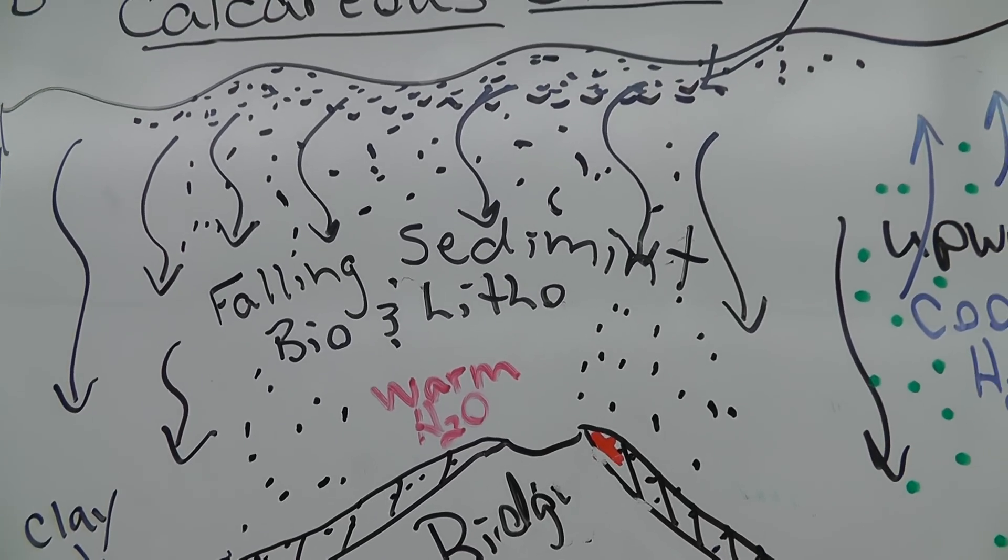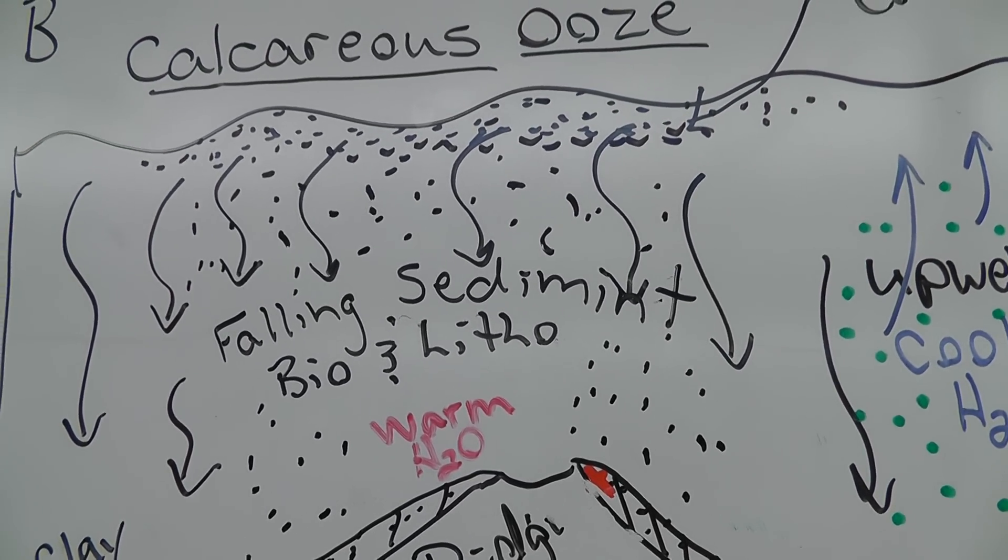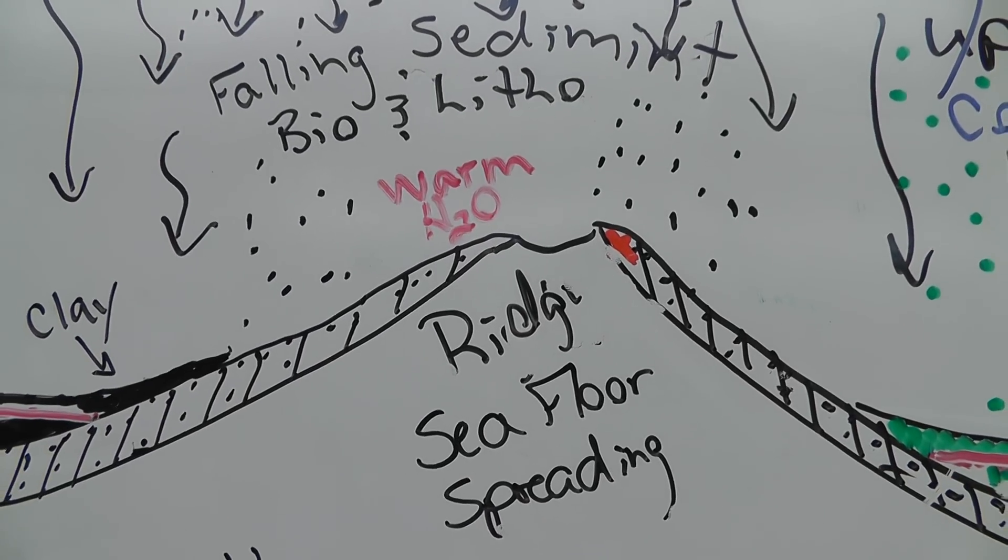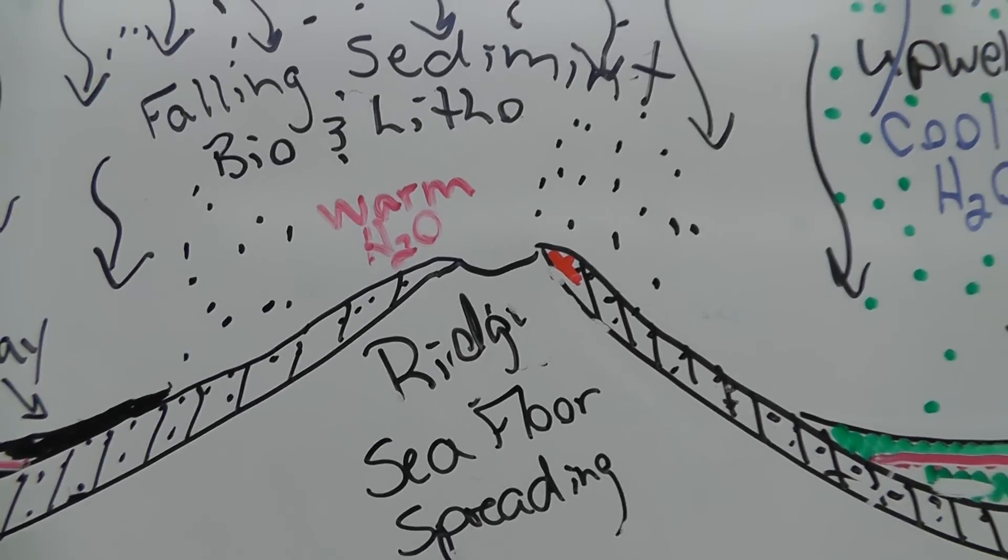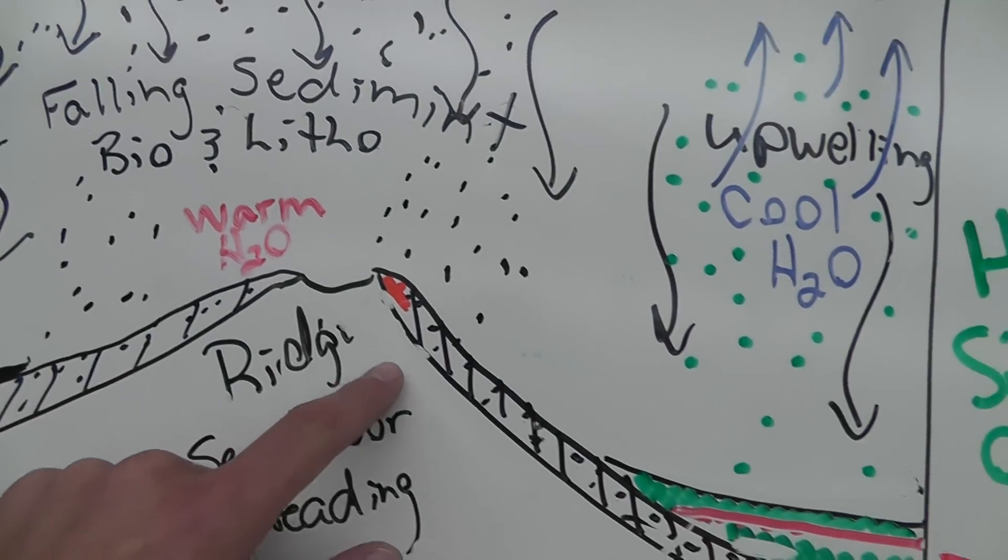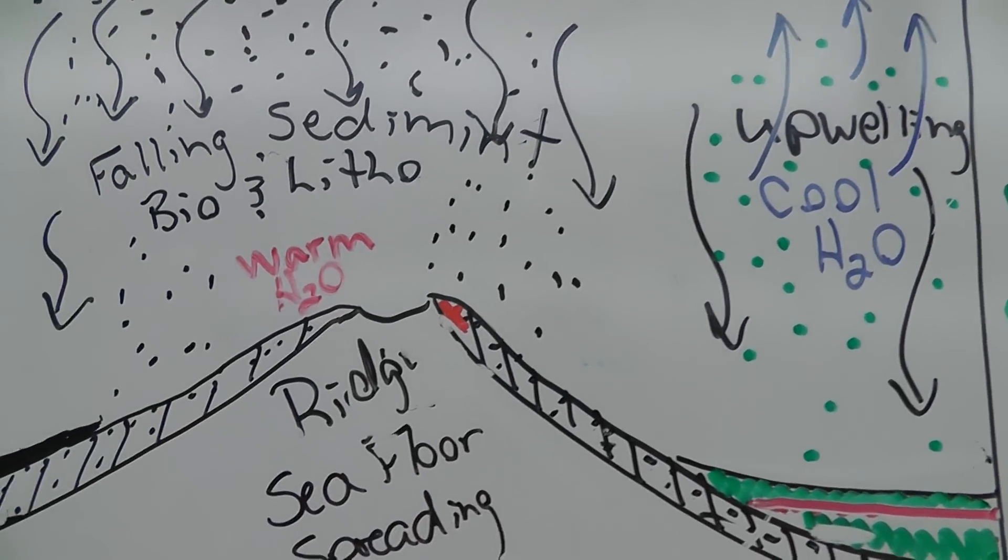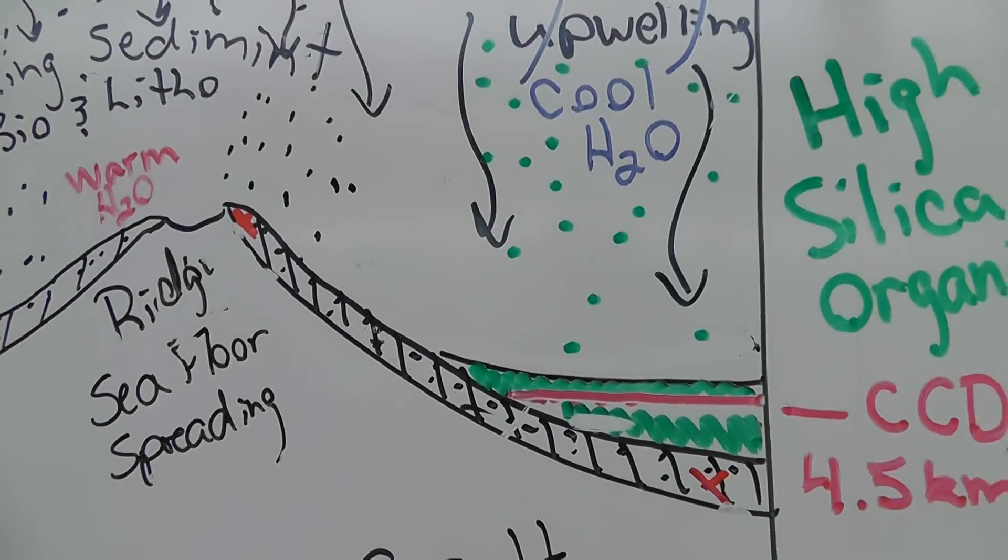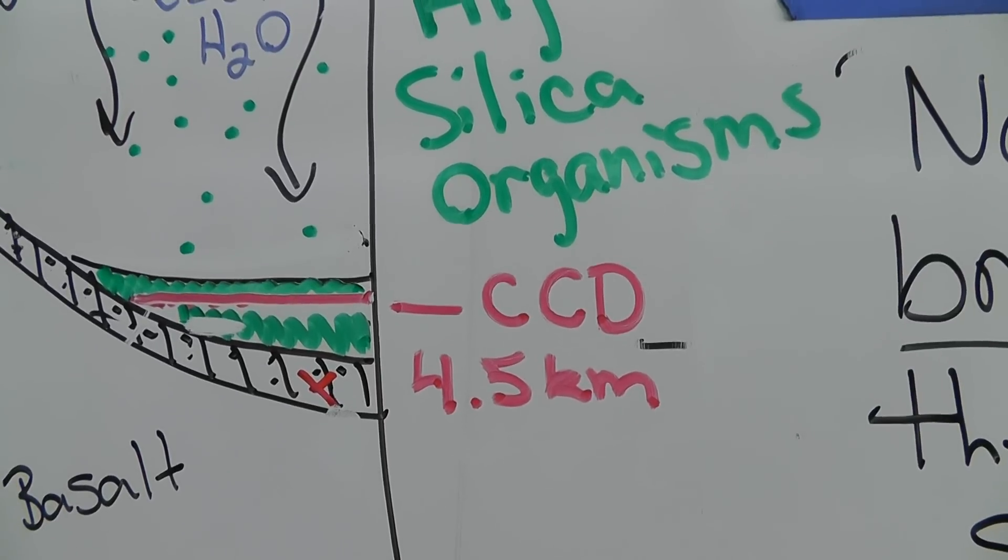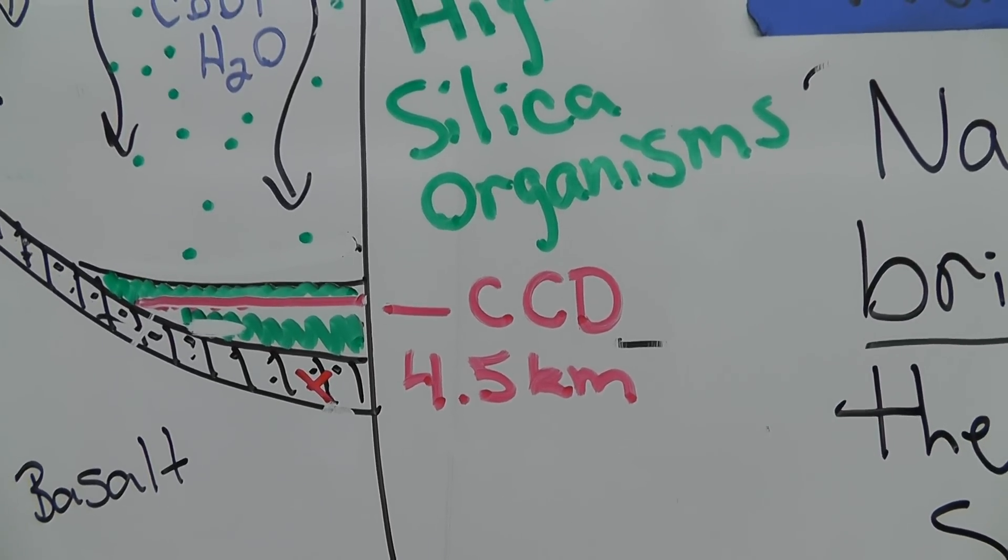So if we look we have a lot of calcite dead calcite organisms falling towards the ridge. So they're going to build up on the ridge. If we look on here they built up here and here. And calcite producing organisms do not fall below the calcite compensation depth which is 4.5 kilometers or 4,500 meters because if they go below that depth they dissolve basically.